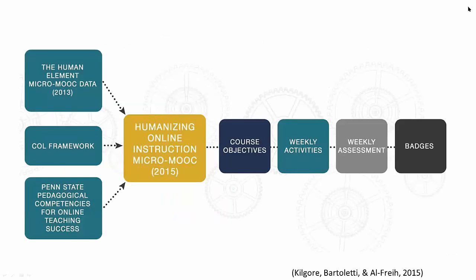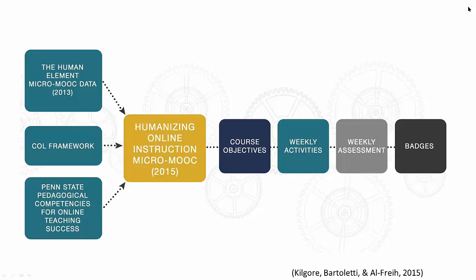The course changed a few times over five iterations. We started with data from the 2013 course, used the community of inquiry framework, and then layered on the Penn State Pedagogical Competencies for Online Teaching Success. We looked for ways to tie the objectives with the weekly activities and assessments so we could badge individual pathways. In the first iteration we didn't know what that looked like, but by version two we were ready to deploy these badge pathways. Each learning outcome was aligned across the Penn State Pedagogical Competencies, and we cherry-picked the ones that made the most sense.